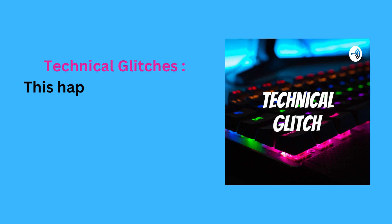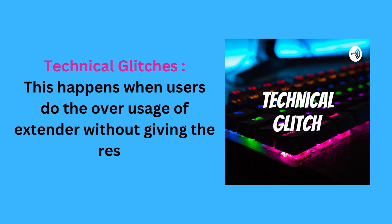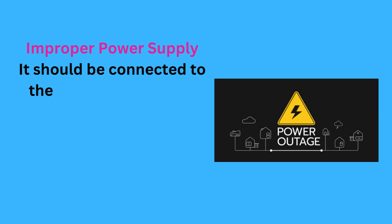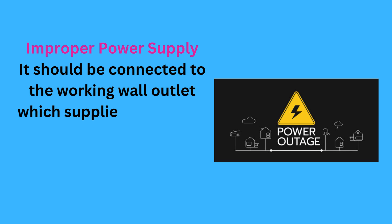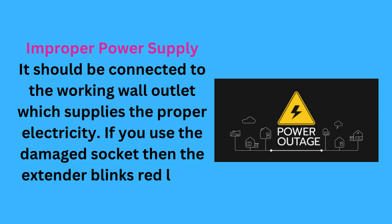Technical glitches: this happens when users do the overusage of the extender without giving it rest. Improper power supply: it should be connected to a working wall outlet which supplies proper electricity. If you use a damaged socket, then the extender blinks red light.